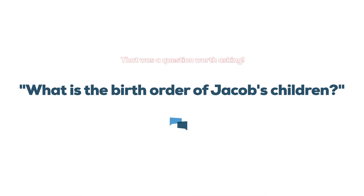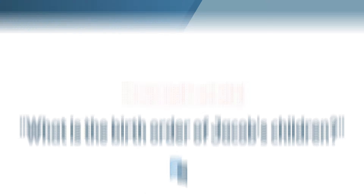That answers your question: what is the birth order of Jacob's 13 children? Thanks for watching.